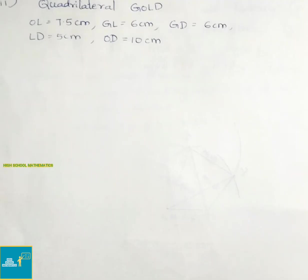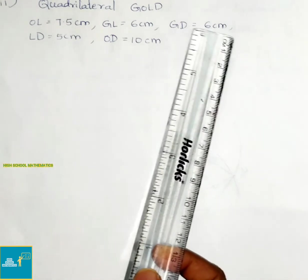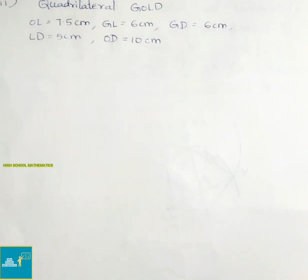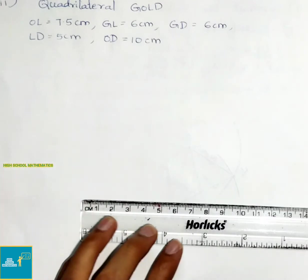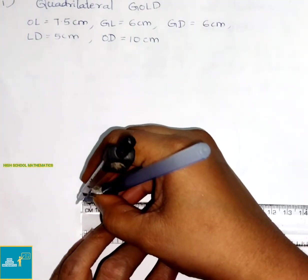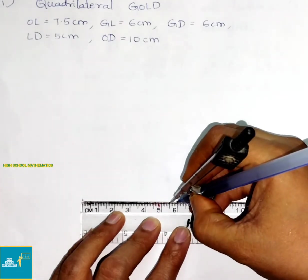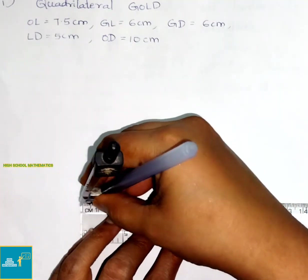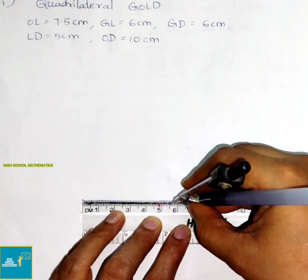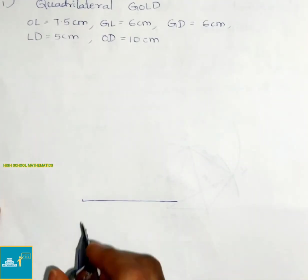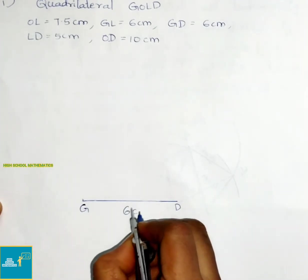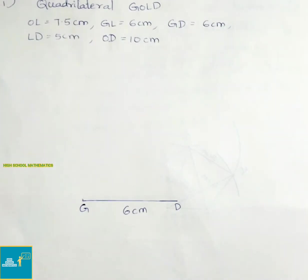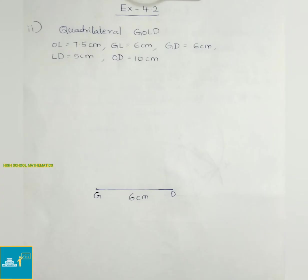Let us take GD equals 6 cm as base. Draw a 6 cm line segment, mark and join the points as GD, and write down the length 6 cm. Now we have to construct triangle LGD.